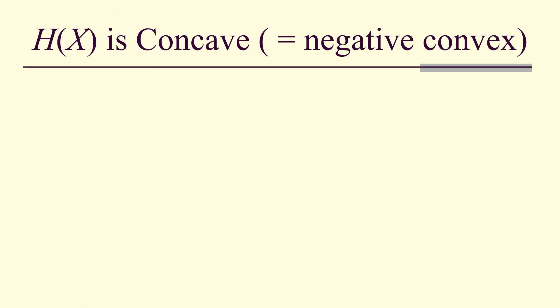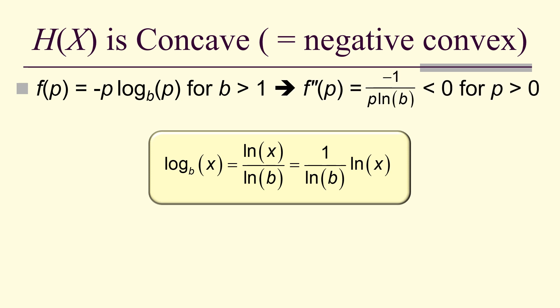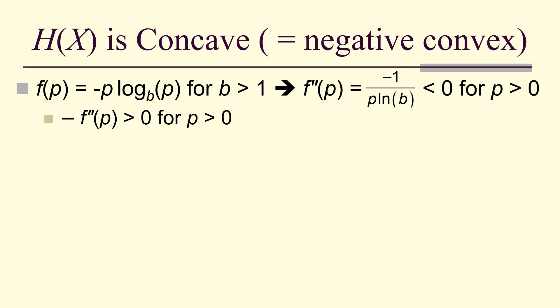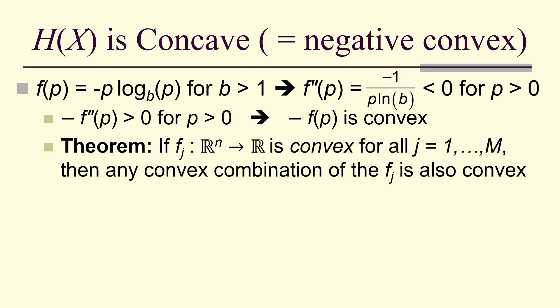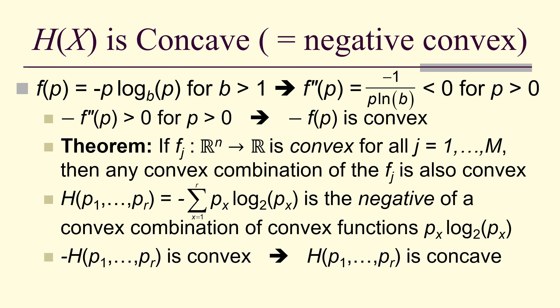So h of x turns out to be concave, meaning its negative is convex. Why? Looking at the function negative p log base b of p for b greater than 1 — our surprisal function — the second derivative is less than 0. Therefore the negative second derivative is greater than 0, and the negative function is convex. Entropy is the negative of a convex combination of convex functions, so negative entropy is convex, and therefore entropy itself is concave. Concavity means we have a unique maximum, if a maximum exists.